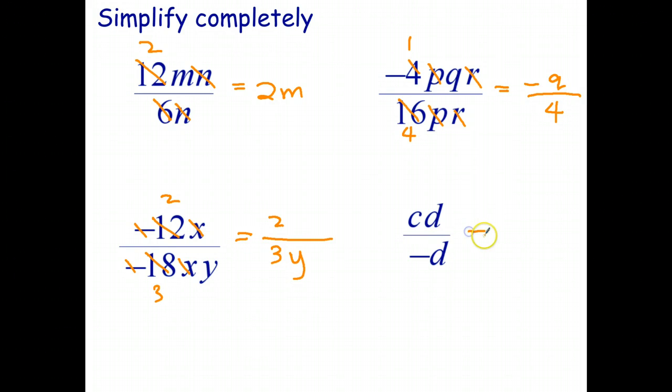And the last one. What we have here is the d's will cross out. Let's just go d goes into d once. d goes into d once. So I've got c on top, or c times 1 on top. And I have negative 1 in my denominator. So that's a bit simpler than that, but it's not the simplest way to write it. Positive divided by a negative is a negative. And c divided by 1 is c. So that just simplifies to negative c.